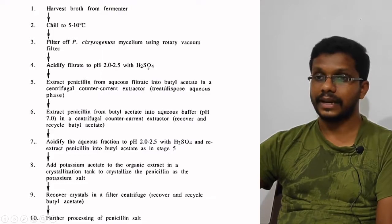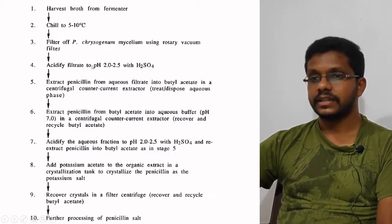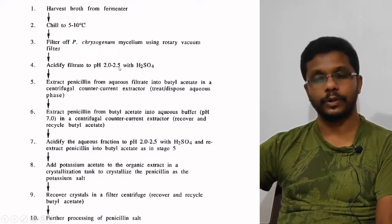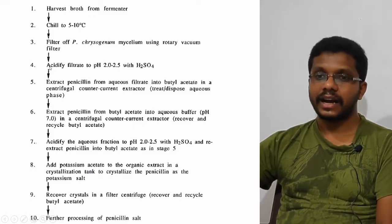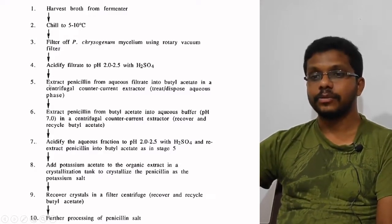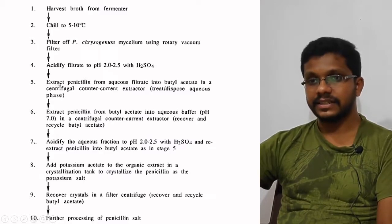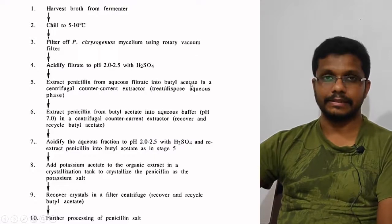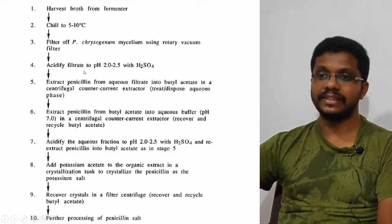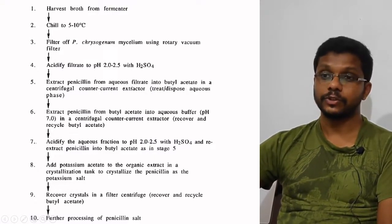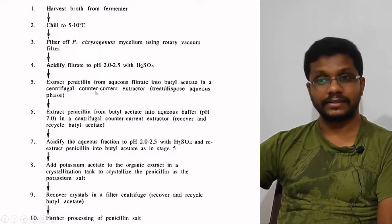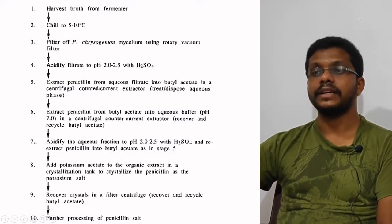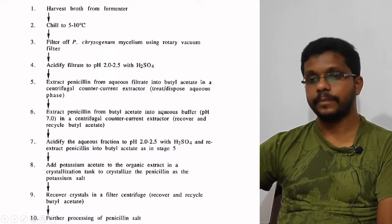The next step is to acidify the filtrate using sulfuric acid to bring the pH to 2.0 to 2.5. After acidification, there is a liquid-liquid extraction step. Penicillin is extracted into butyl acetate, because the acidified penicillin is more soluble in butyl acetate. In a counter-current extraction process, the penicillin in the aqueous medium is extracted into butyl acetate.